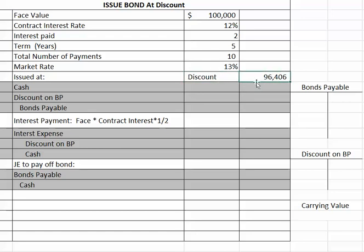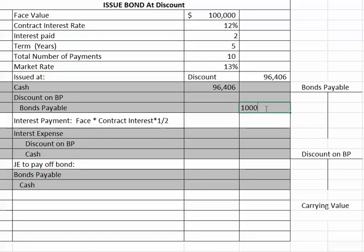In this particular problem, we're going to issue the bond for $96,406. When we issue the bond, we'll debit cash for the amount of cash received, which is $96,406, and we'll credit bonds payable for the face amount of the bond.